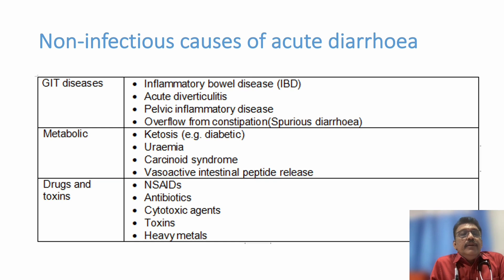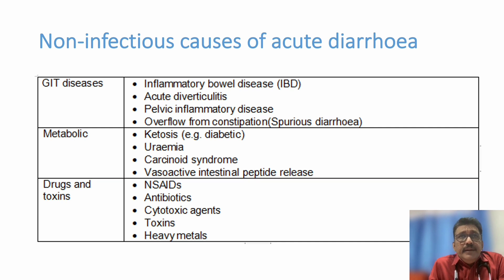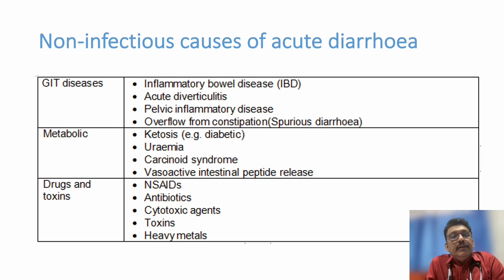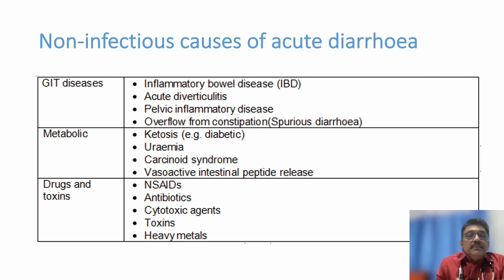Non-infectious causes of acute diarrhea include GIT causes like IBD and acute diverticulitis, and metabolic causes like diabetic ketoacidosis (DKA) — an important condition where the patient can have abdominal pain and diarrhea. DKA is high blood sugar with acidosis. Uremia, carcinoid syndrome — which causes a secretory type of diarrhea — and VIPomas can all produce diarrhea, though we will not discuss all these in detail here.